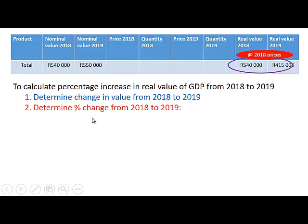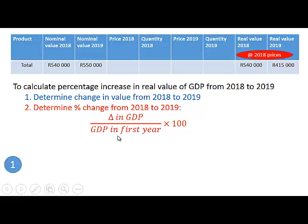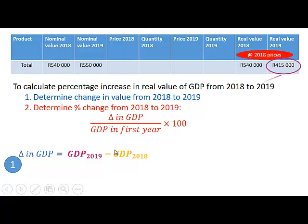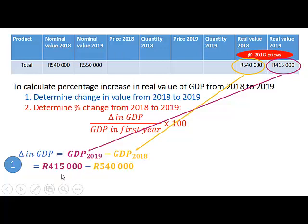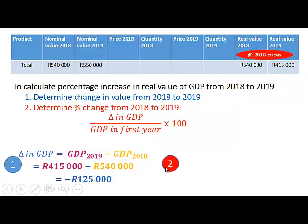Step one: determine the change in value. The change in GDP is GDP for 2019 minus GDP for 2018 — so 415,000 minus 540,000 — which gives us a negative amount of minus 125,000, because the real value decreased.